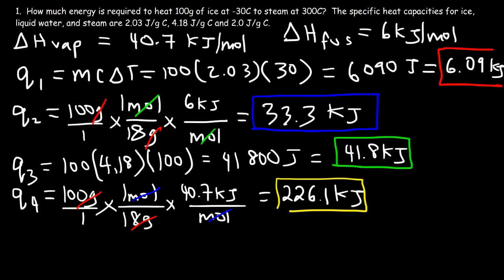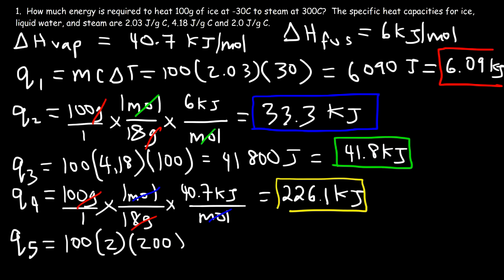For Q5, it's another temperature change problem using MC delta T. The mass is 100, the specific heat capacity of steam is 2 joules per gram per Celsius, and the temperature change from 100 to 300 Celsius is 200 degrees. So it's 100 times 2 times 200, which equals 40,000 joules, or 40 kilojoules.